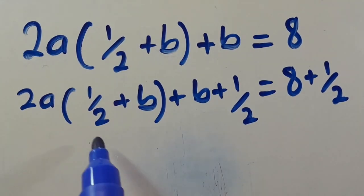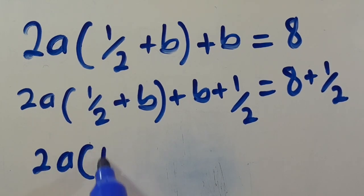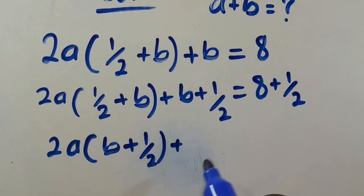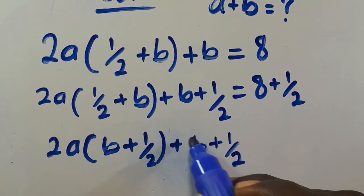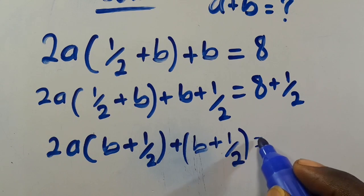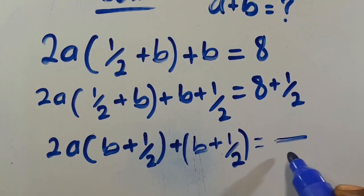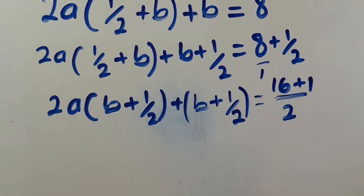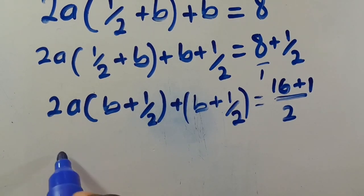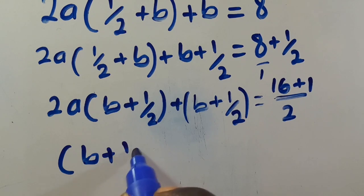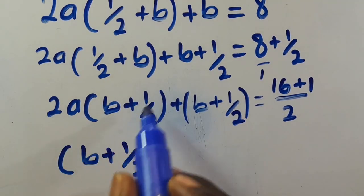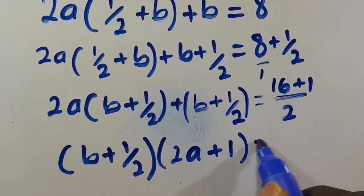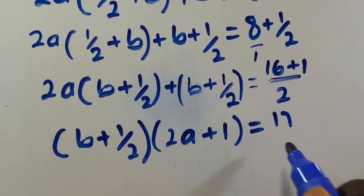From here, we see we have 2a times (b plus 1 over 2) plus (b plus 1 over 2). Finding the LCM to be 2 on the right side, we get 16 plus 1 over 2, which equals 17 over 2. The term (b plus 1 over 2) is common, so we factor it out: (2a plus 1) times (b plus 1 over 2) equals 17 over 2.